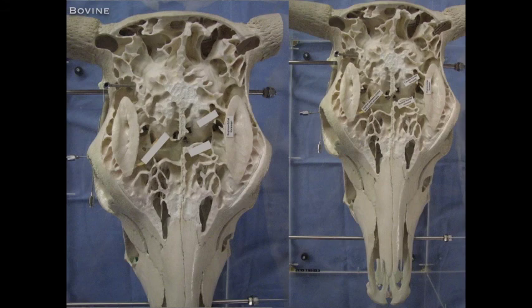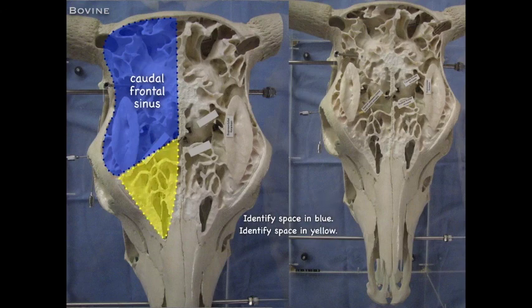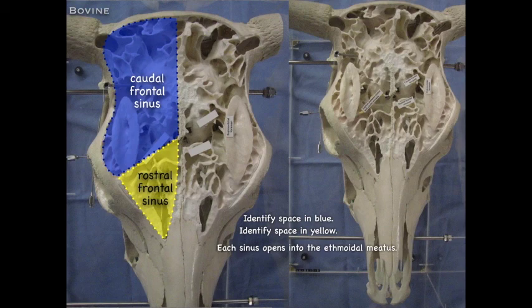In this horned breed skull the sinuses have been sculpted out so you can see them. The blue region is the caudal portion of the frontal sinus, and the other portion is the rostral frontal sinus. Generally the rostral portion has about two or three compartments, each opening separately into the ethmoidal meatus into the nasal cavity. The caudal frontal sinus is much larger and more clinically significant; it also opens into the ethmoidal meatus.